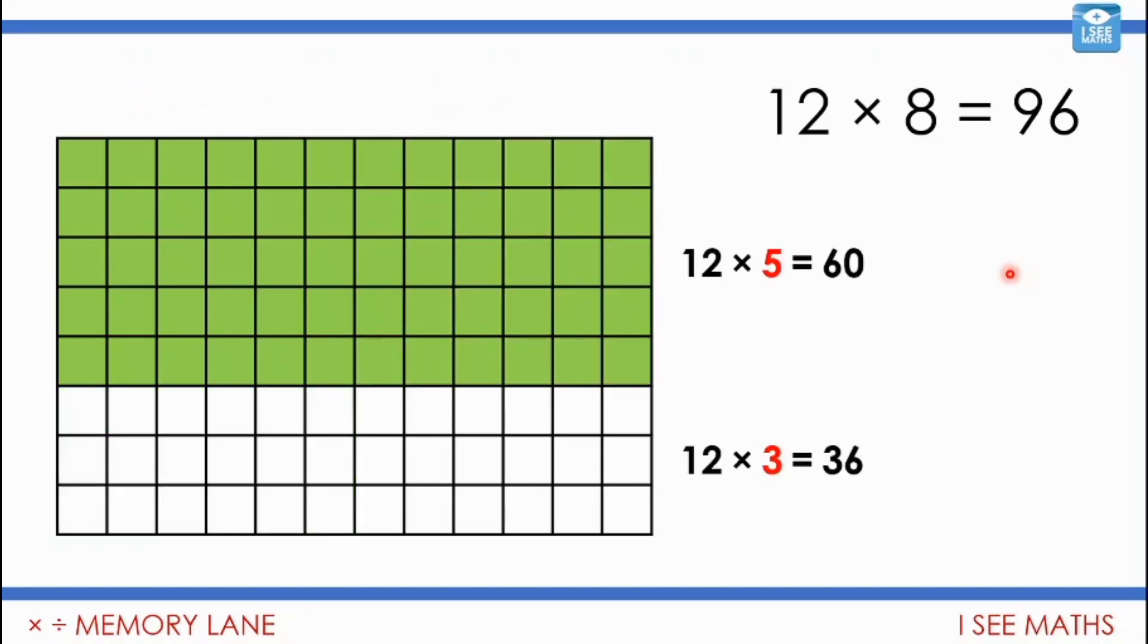Or maybe instead we could think: if I know 12 fives and 12 threes, I could split up the 8 into a 5 and a 3. So 12 fives are 60, 12 threes are 36. Add them together, of course, still 96.